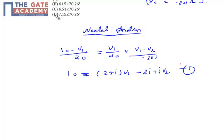Now let's apply the node at node V2. Sum of incoming current is equal to sum of the outgoing current. V1 minus V2 by minus 20J which will be equal to 4V1 by 20 plus V1 by 30 plus J10. Let's solve it.